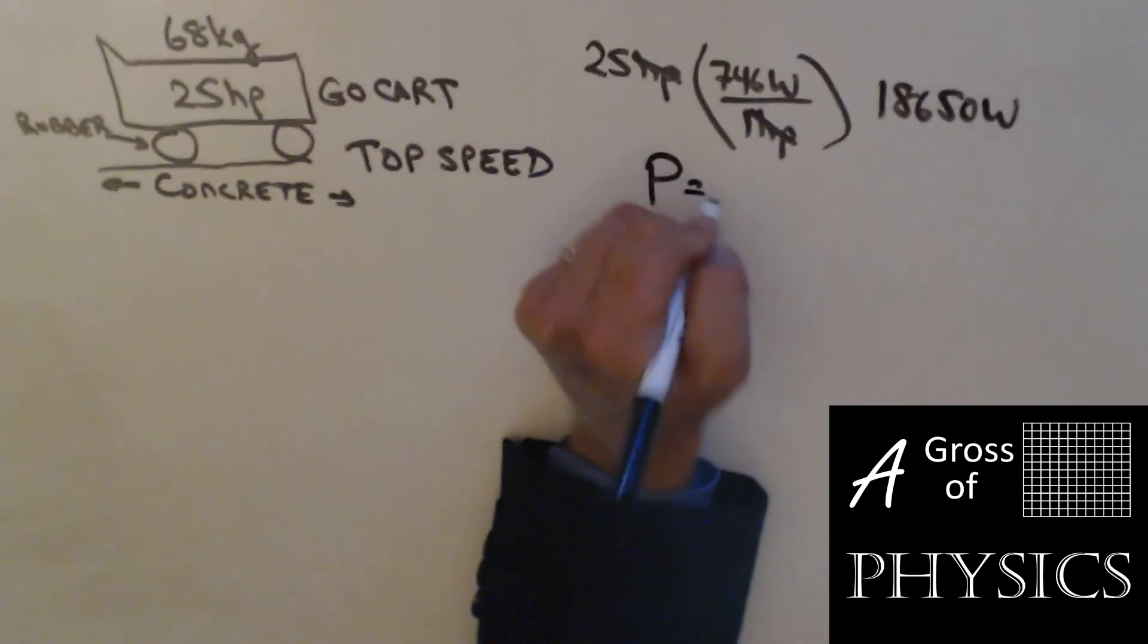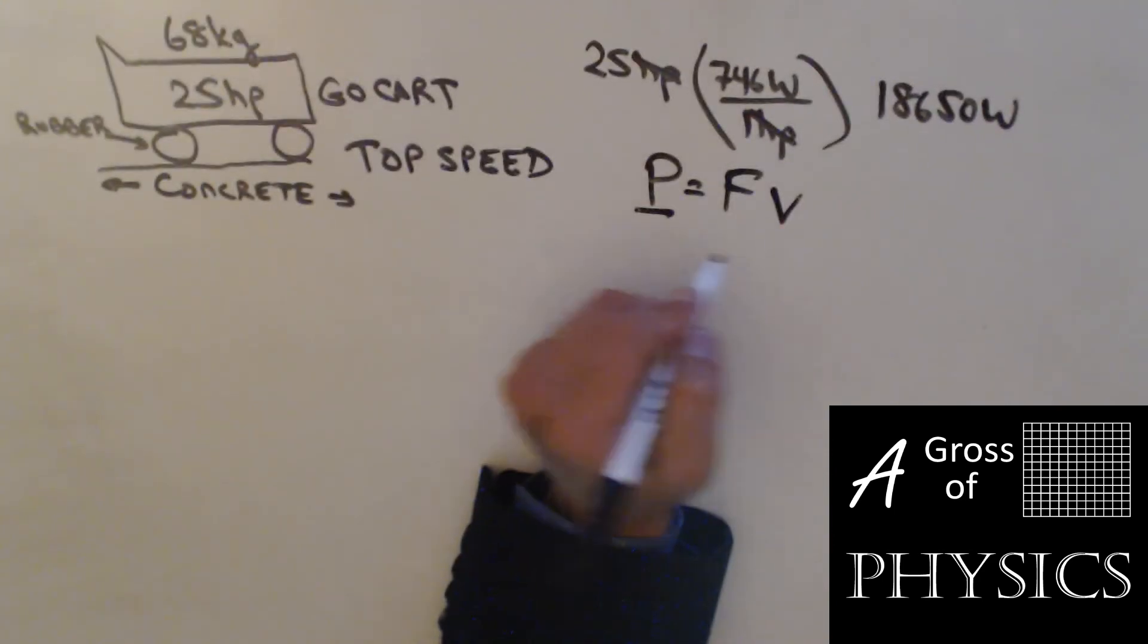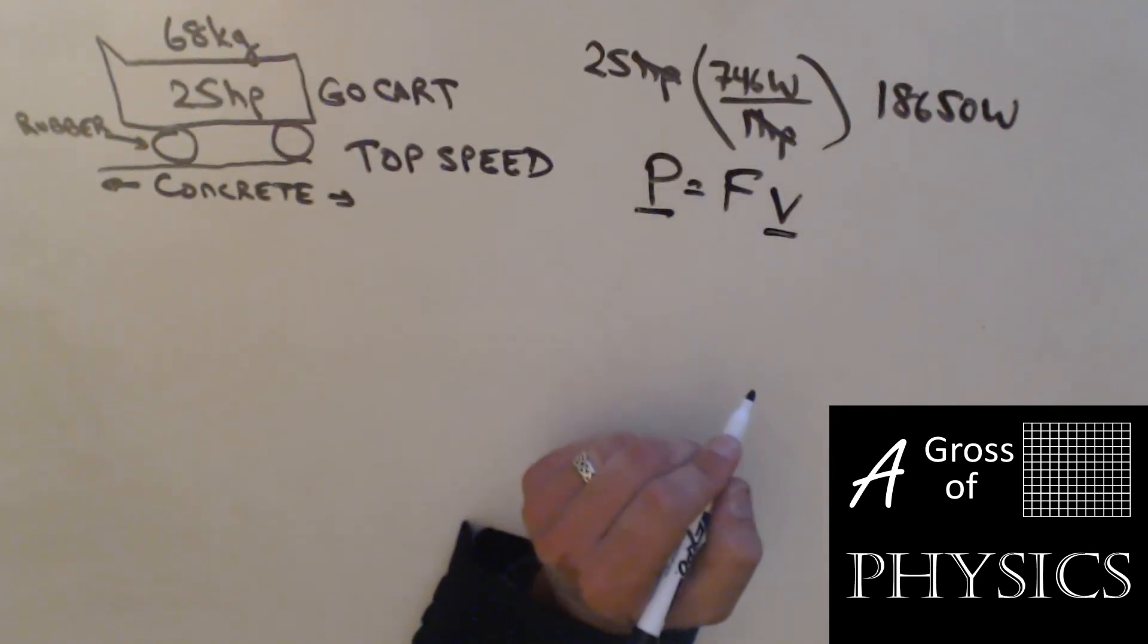Power is force times velocity. We know the P. We're trying to find the velocity, but we need to figure out the force that we have to overcome.